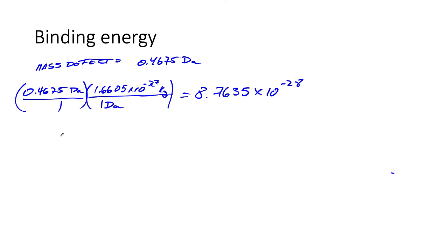Then we're going to use Einstein's equation, E equals mc squared. So now we're going to calculate the binding energy that keeps the nucleus together. So this energy is equal to the mass in kilograms, 8.7635 times 10 to the minus 28, speed of light is 2.98 times 10 to the eighth.